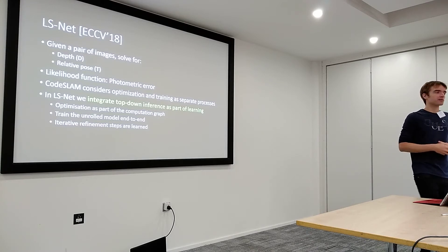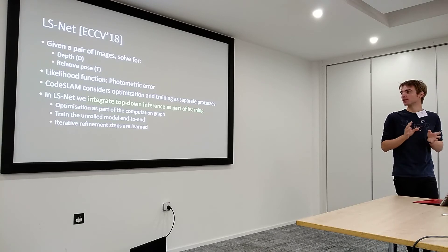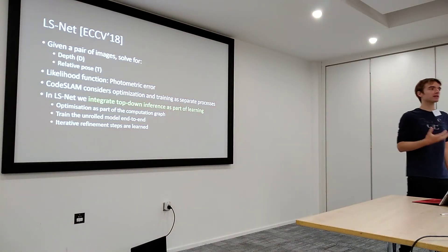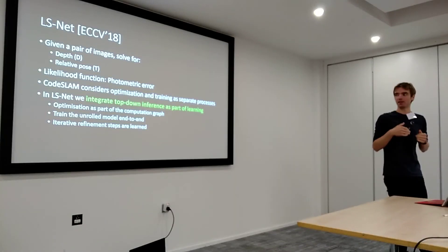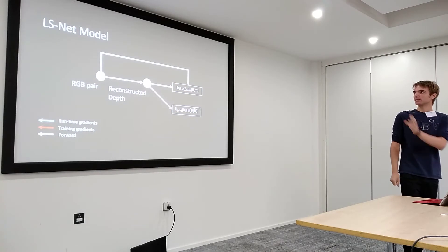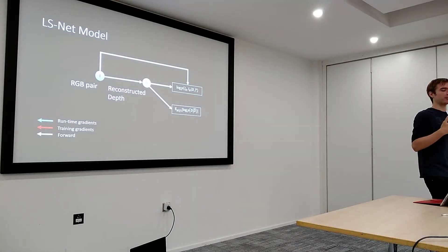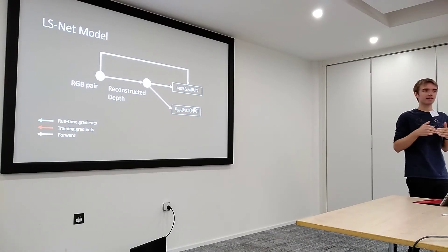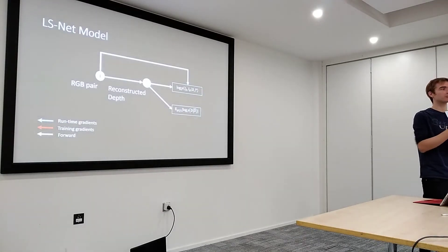Moving on to our next work, LSNet. In the CodeSLAM approach the optimization and training processes were kept fairly separate. In LSNet we actually integrate this top-down inference — the iterative optimization — as part of our learning. We have the optimization as part of our computation graph and train the whole unrolled model end-to-end. Because we train through the optimization, we can actually learn to condition the updates better than a standard Gauss-Newton update, which allows us to circumvent the need for a low-dimensional compressed code for doing the optimization.